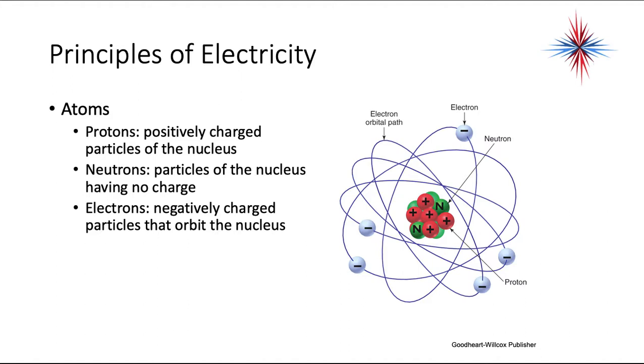Let's start off with the easy part and the most basic principles of electricity - it's the atom. An atom is made up of protons, which are positively charged particles of nucleus, neutrons, which are particles of the nucleus having no charge, and electrons, they're negatively charged particles that orbit the nucleus.